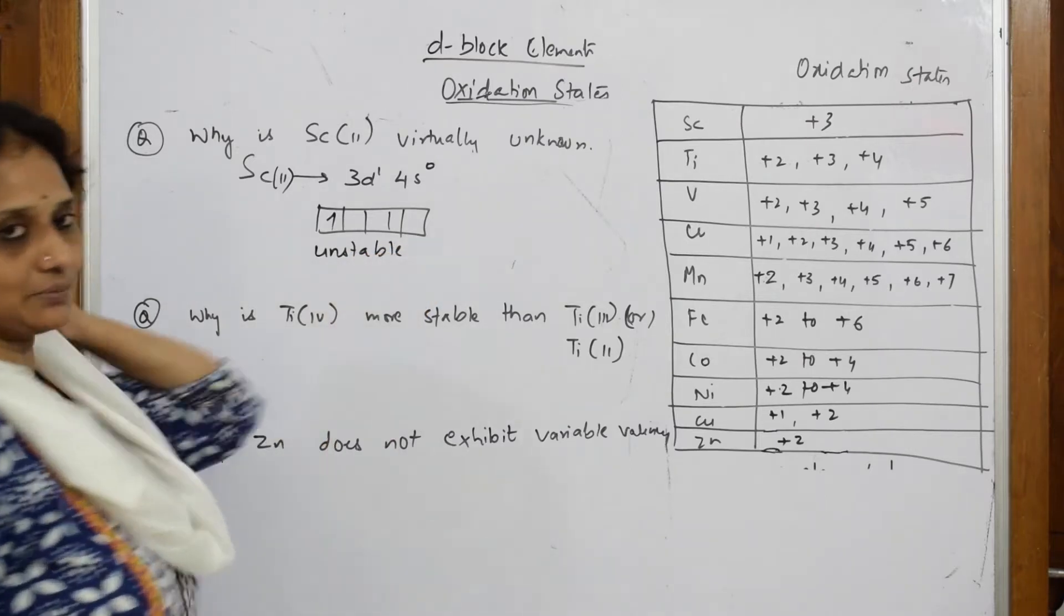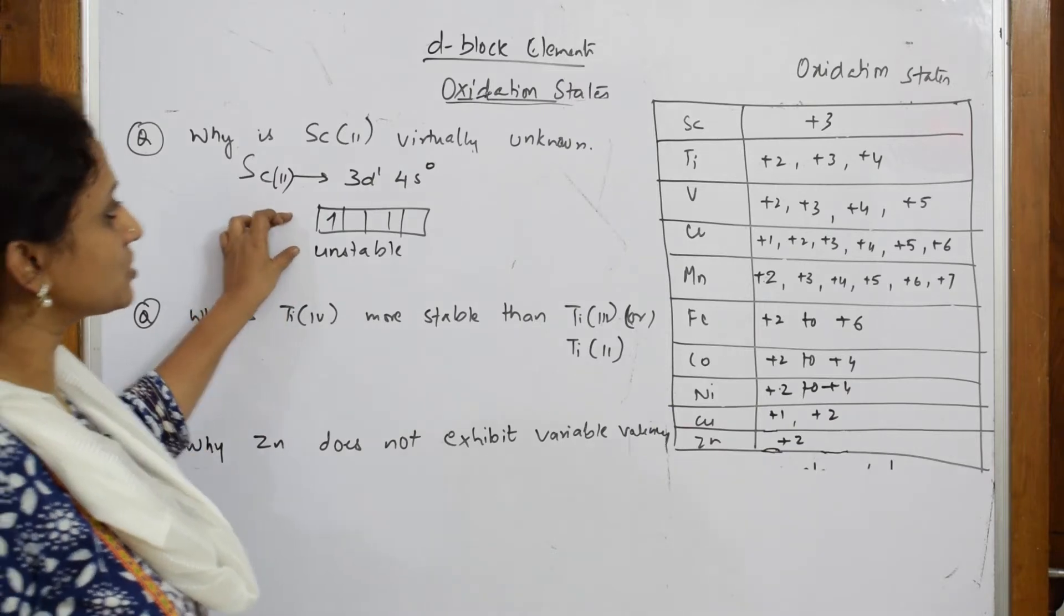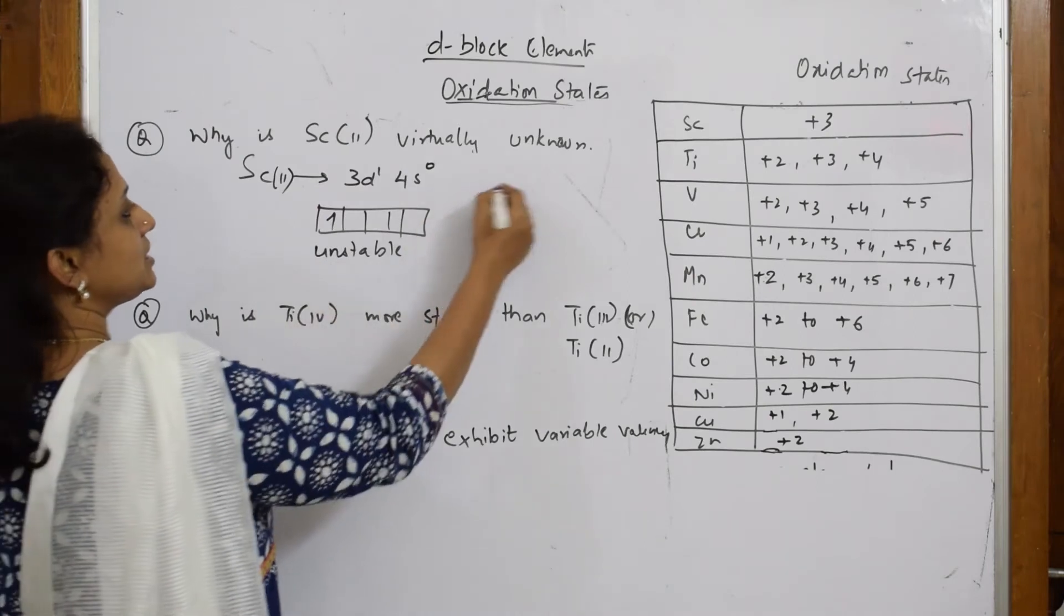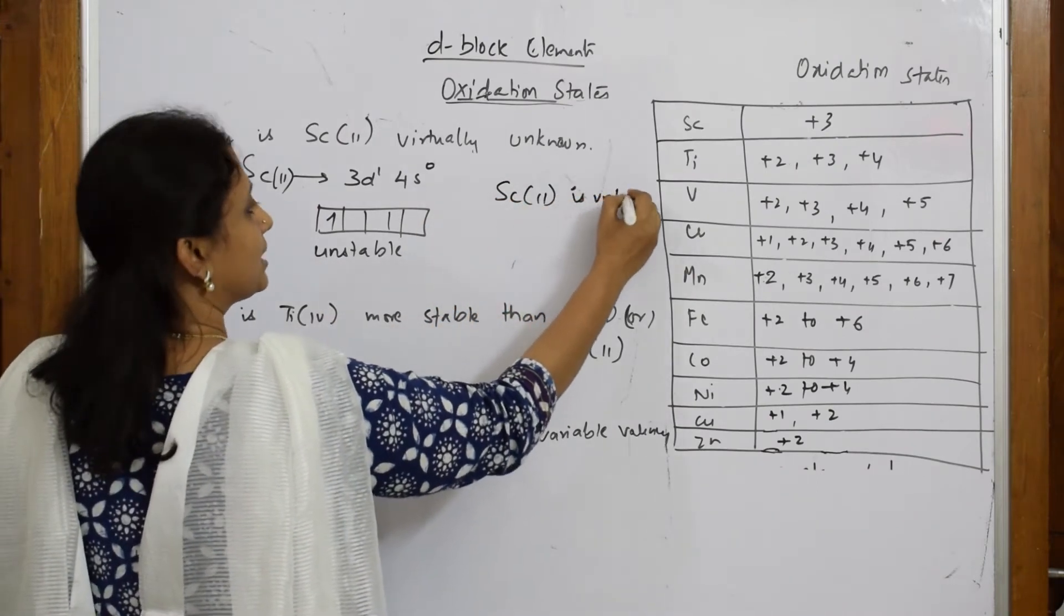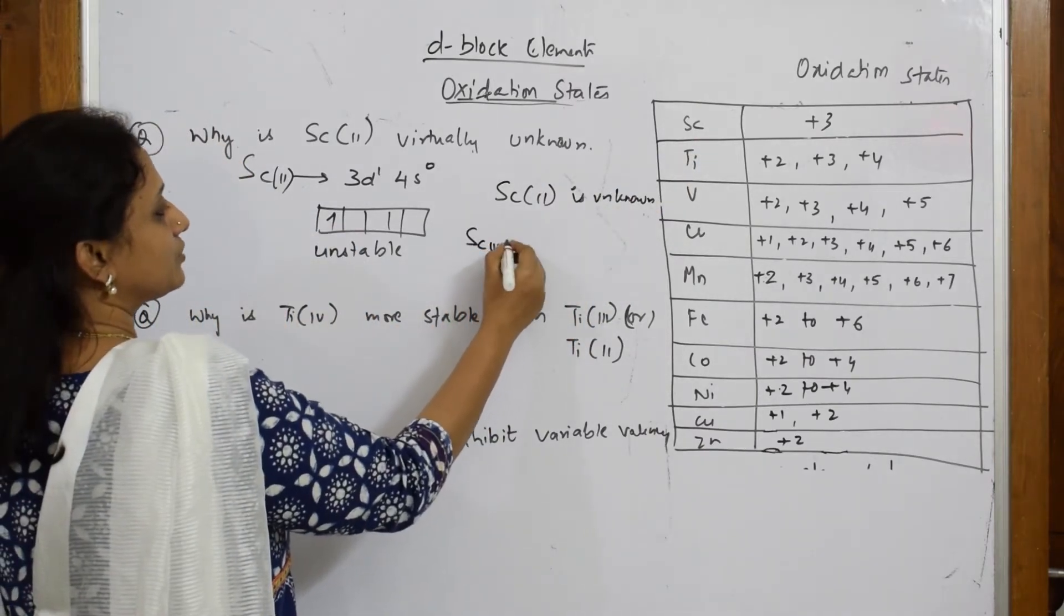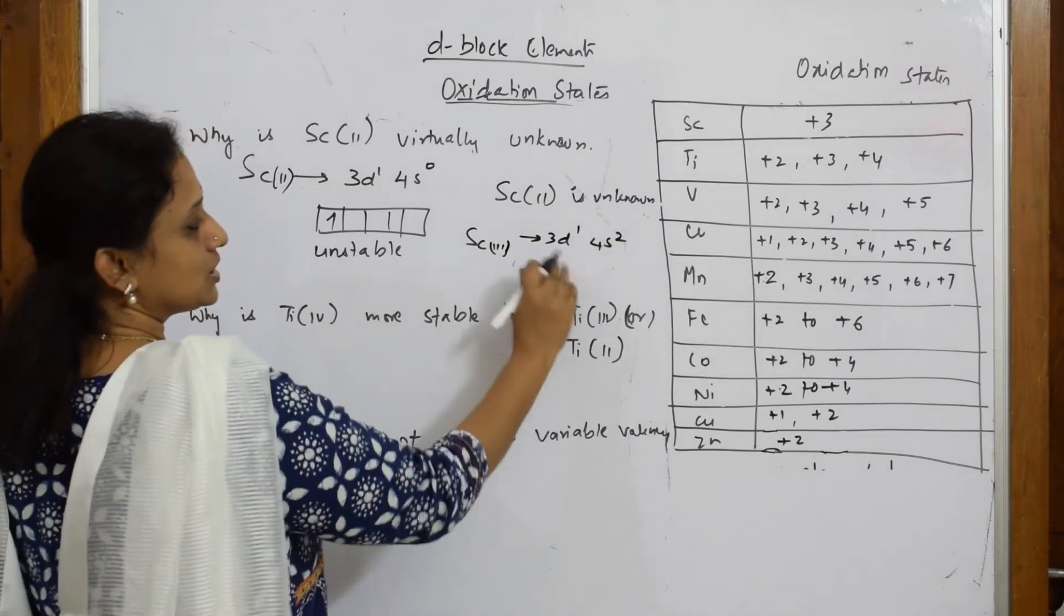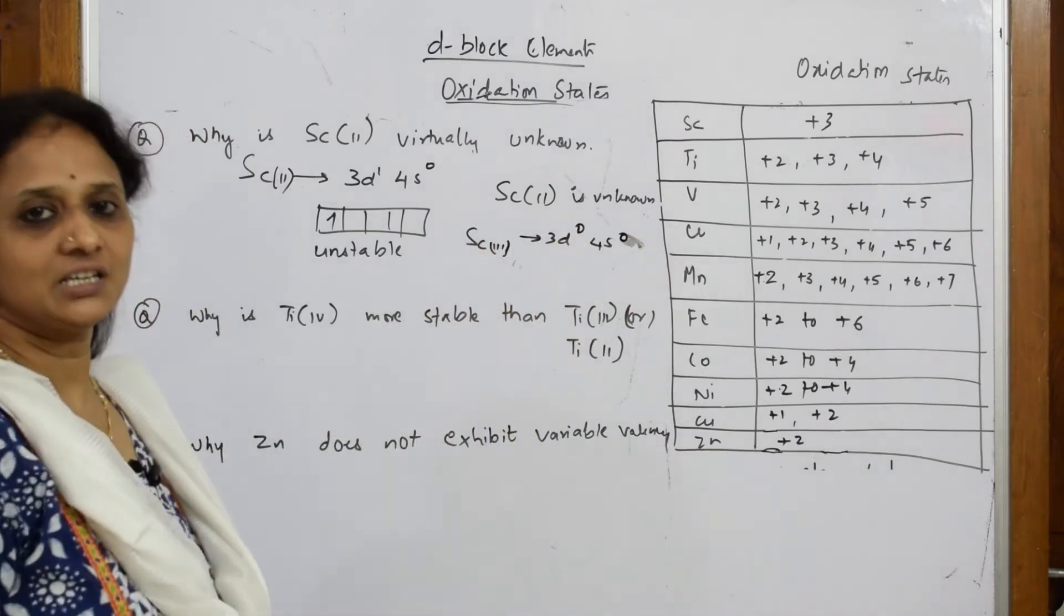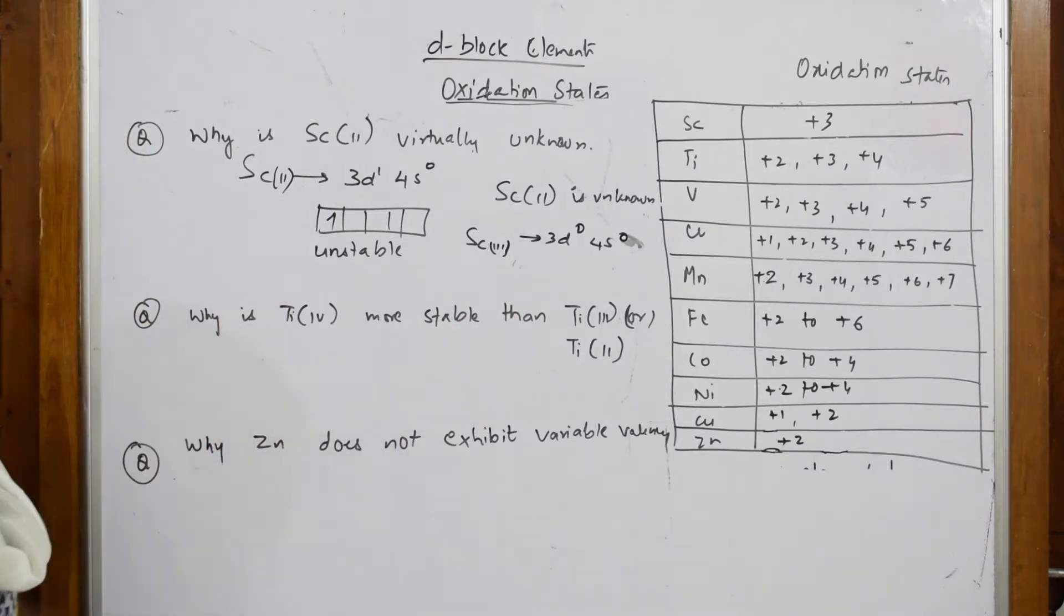When this is highly unstable, scandium doesn't show this type of oxidation state. So +2 is not shown. It can only start from +3, because of this instability, Sc2+ is unknown. But it is going to show +3. So when it is +3, how does it look? Scandium +3, if I have to write, is 3d1 4s2. So +3 means this becomes 0 and this also becomes 0. The leftover configuration is stable inert gas configuration.